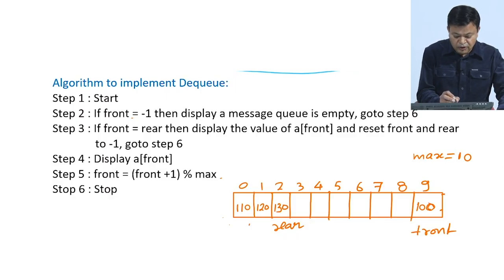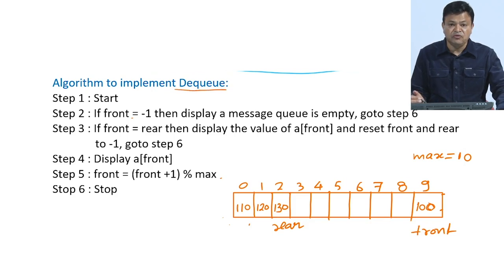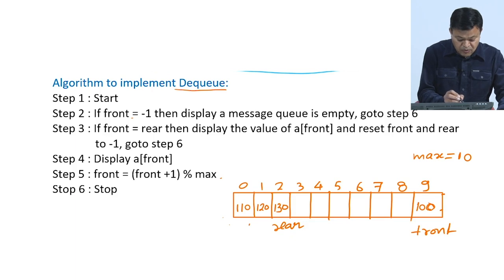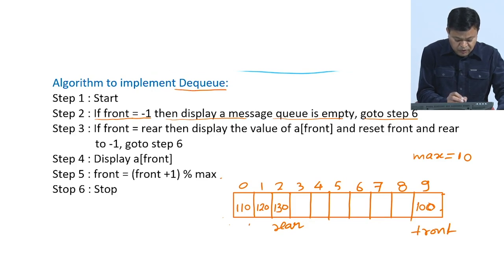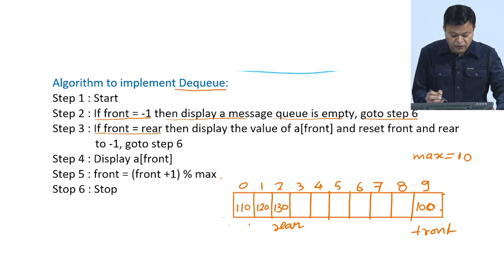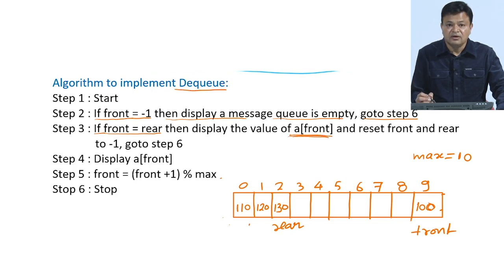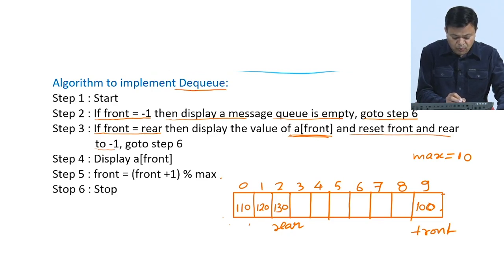Now let us discuss the algorithm to implement dequeue. Whenever we want to serve an element from the front, the extreme condition is that the queue may be empty. In step 2, if front equals minus 1, we display 'queue is empty' and go to the last step. In step 3, if the queue is not empty and front equals rear, there is only one element — we display a[front] and reset both front and rear to minus 1.